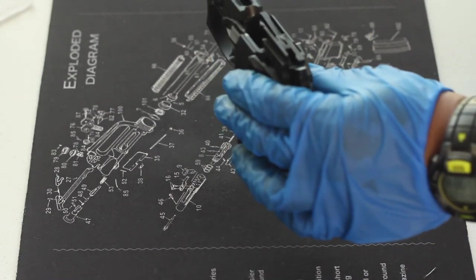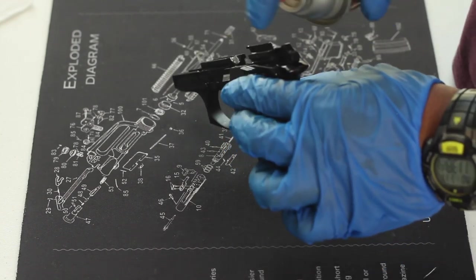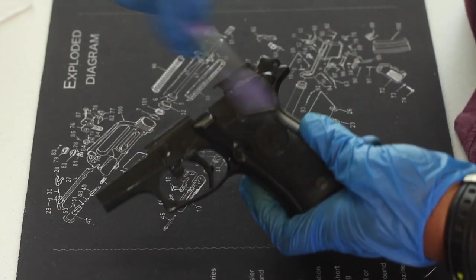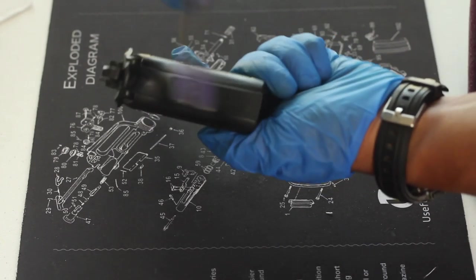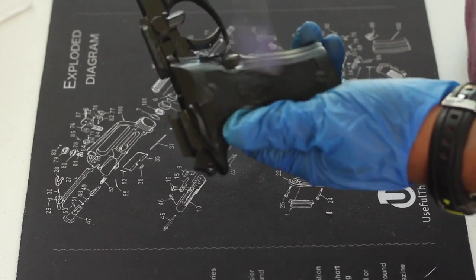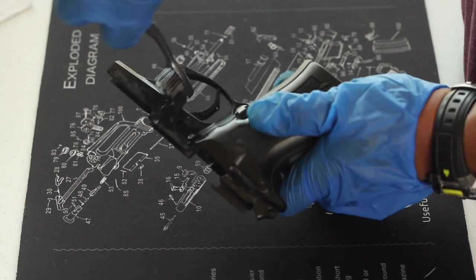Now move on to the receiver. Spray it down with gun cleaner inside and out. Scrub it down with a nylon toothbrush. Make sure to get all the cracks and crevices inside and out, inside the trigger guard, just everywhere. When you're done with the nylon toothbrush, go through it with a Q-tip. Get all the parts that you can't get with a brush with a Q-tip and pay special attention to the rails.